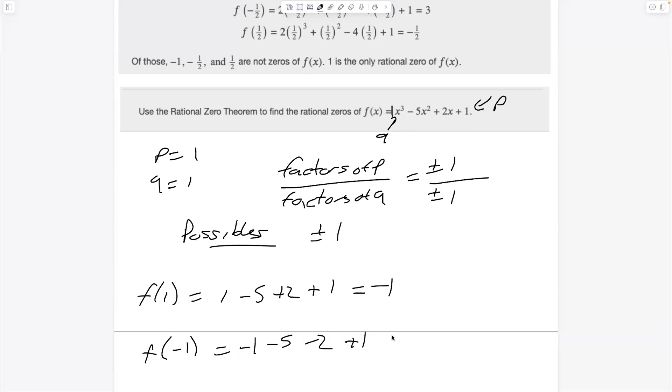Okay, now we just add all this up. So that's negative six, negative eight, plus one, negative seven. What does that mean? This function has zero rational zeros, has none. There is no rational number, no fraction you can plug in here and get zero.